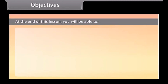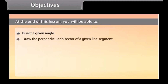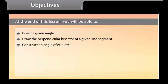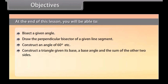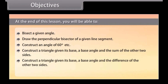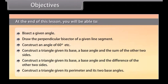At the end of this lesson, you'll be able to: bisect a given angle; draw the perpendicular bisector of a given line segment; construct an angle of 60 degrees; construct a triangle given its base, a base angle and the sum of the other two sides; construct a triangle given its base, a base angle and the difference of the other two sides; and construct a triangle given its perimeter and its two base angles.